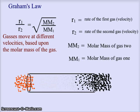With Graham's Law, we're comparing rates of the movement of gases. We have R1, the rate of the first gas, over R2, the rate of the second gas, equals the square root of the molar mass of the second gas divided by the molar mass of the first gas. So MM2 represents the molar mass of the second gas, and MM1 is the molar mass of the first gas.